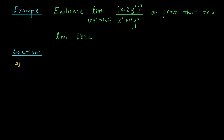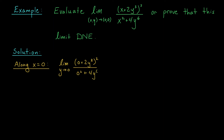So why don't we see what our function is doing as we move to the origin along the y-axis, along the line x equals 0. Along this line, our x's are 0, so I have the limit as y tends to 0 of (0 + 2y³)² divided by 0² + 4y⁶. Throw those zero terms out and simplify. You should get the limit as y tends to 0 of 4y⁶ divided by 4y⁶, which is 1.